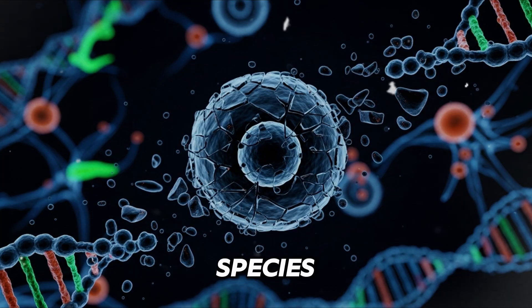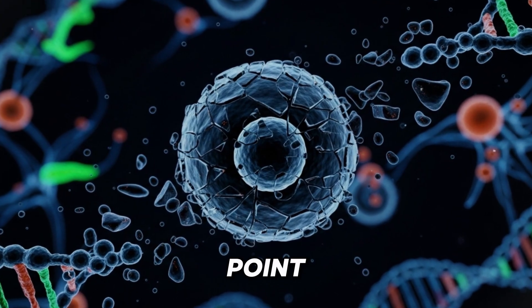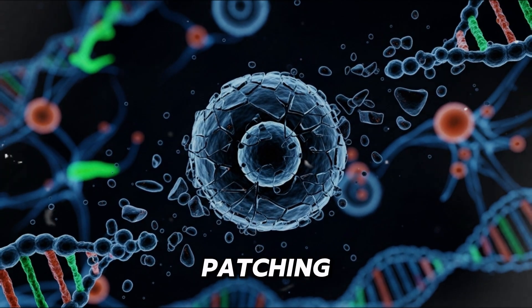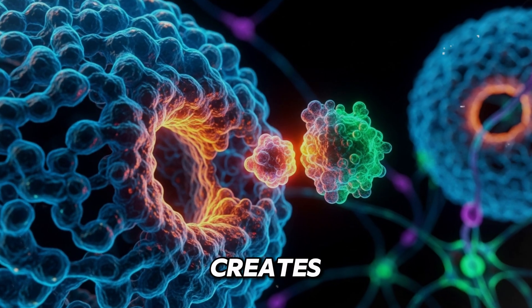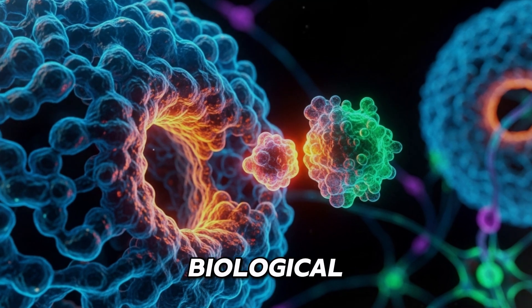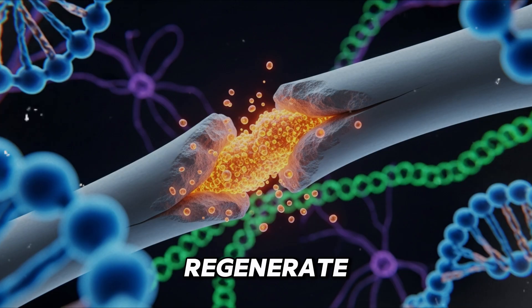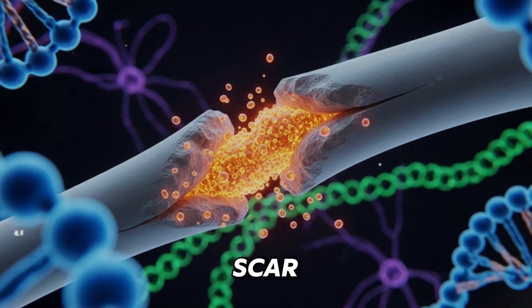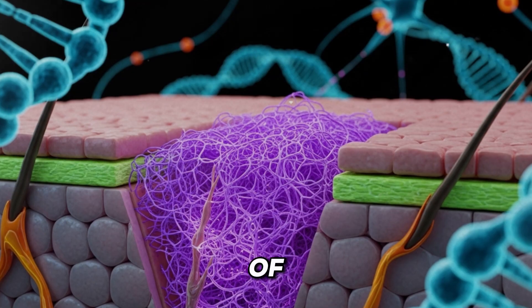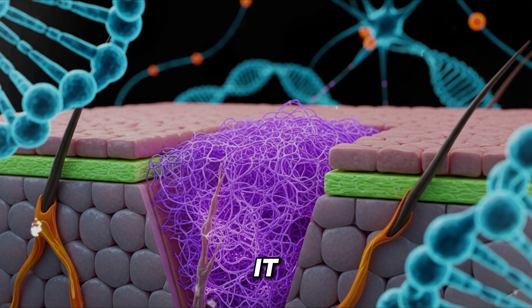We, as a species, are masters of healing, but only up to a point. We are masters of patching. When we break a bone, the body doesn't regrow the bone. It creates a callus, a biological glue. When we get a deep cut, we don't regenerate perfect new skin. We create a scar. A scar is the symbol of human healing. It is fast, it is messy, and it is imperfect.